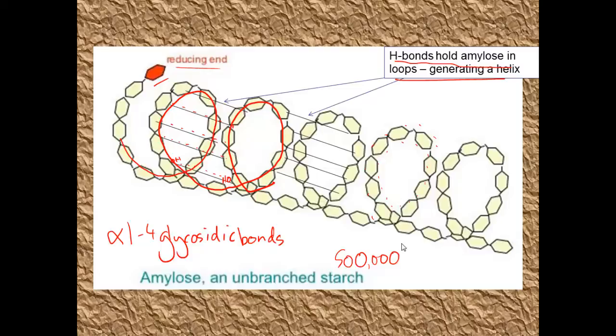This helix that amylose has helps it to be a nice compact storage molecule. The hydrophilic bits tend to be wrapped up on the inside of these loops. That means that amylose is largely insoluble. This furthermore means that it has no osmotic effect. It doesn't lower the water potential of a solution that it's in. This is very important for its function as a storage molecule because you do not want your storage molecule changing the water potential of your cells. So amylose, compact molecule in a helix, insoluble, osmotically neutral.